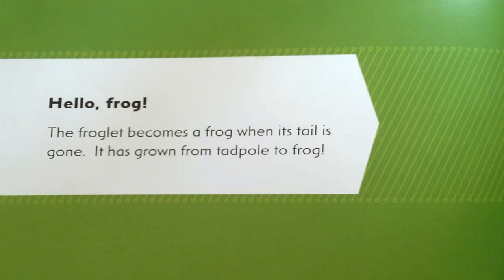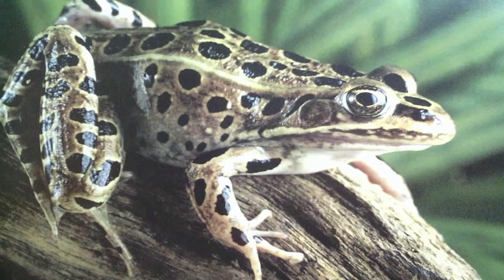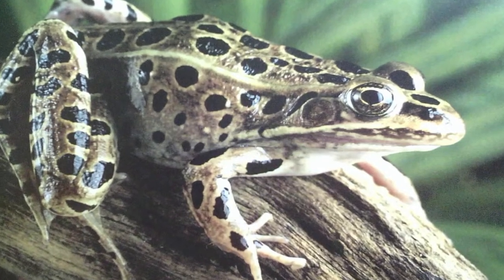The froglet becomes a frog when its tail is gone. It has grown from tadpole to frog.